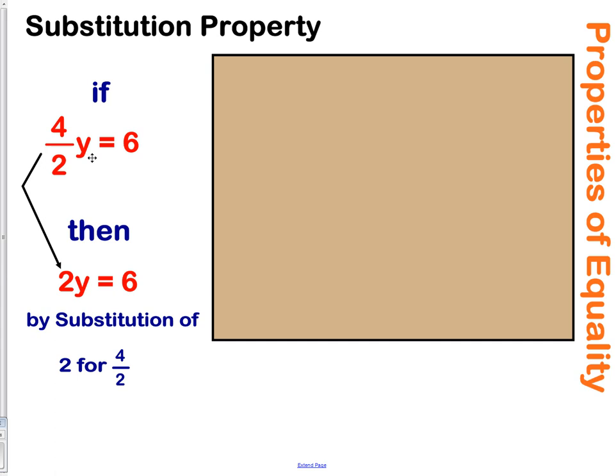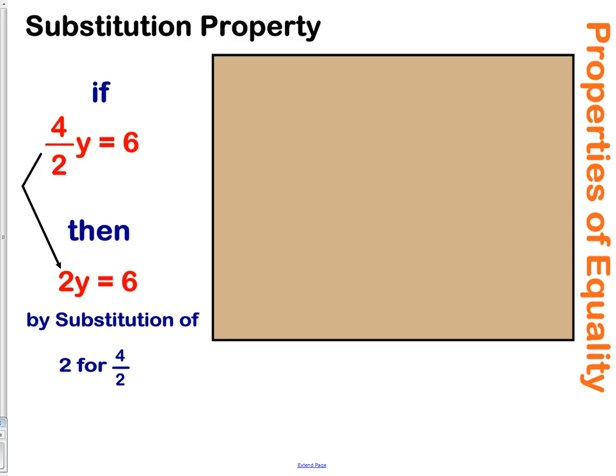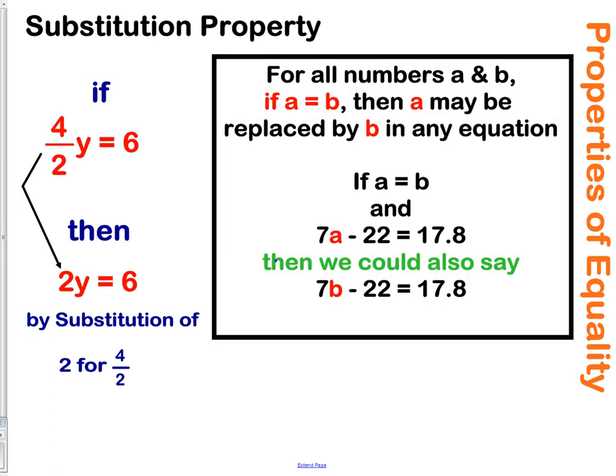We also have the substitution property. Notice on the left, we have 4 over 2y equals 6, then 2y equals 6. We've taken 4 divided by 2 and changed it into 2 — we've substituted. Written out, for all numbers A and B, if A equals B, then A may be replaced by B in any equation. For example, if A equals B and 7A minus 22 equals 17.8, then we can also say 7 times B minus 22 equals 17.8.